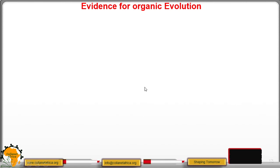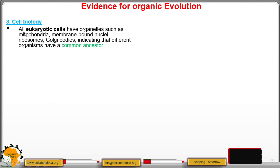We are still discussing other evidences supporting organic evolution. The third evidence is called cell biology. All eukaryotic cells have organelles such as mitochondria, membrane-bound nuclei, ribosomes, golgi bodies, among others, indicating that different organisms have a common ancestor. Eukaryotic cells are cells that are bound by a membrane.